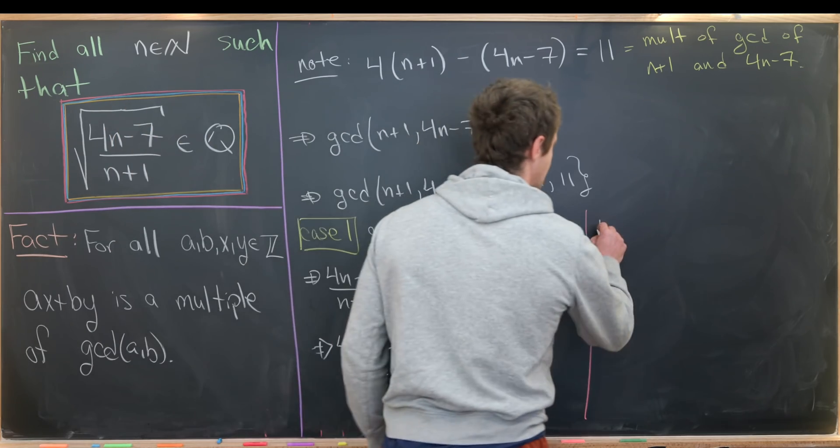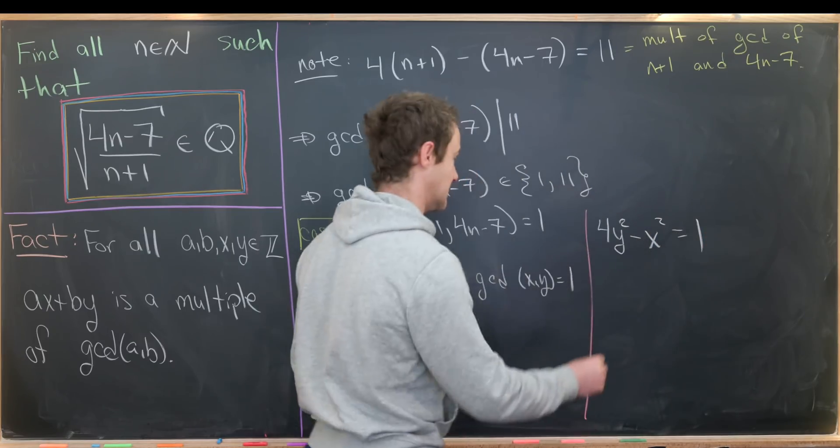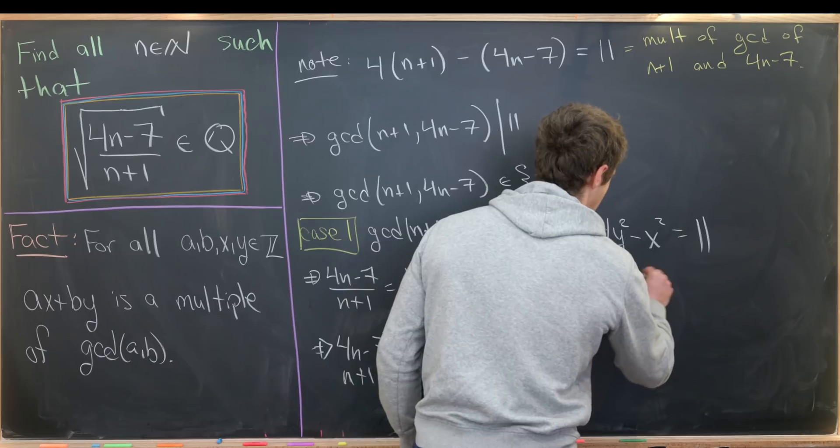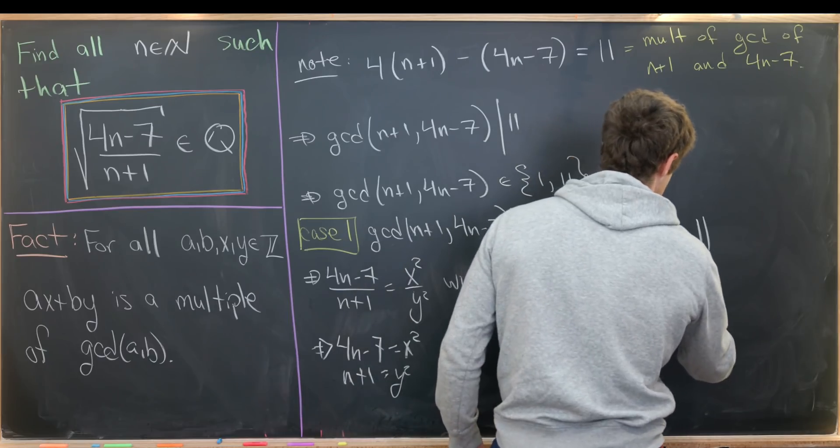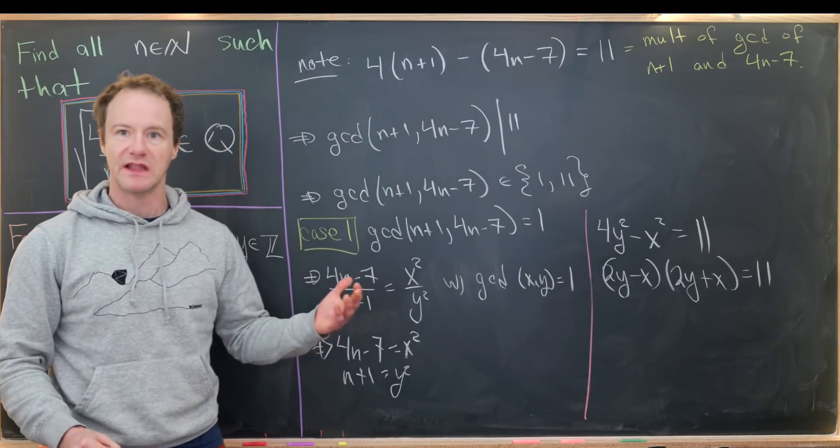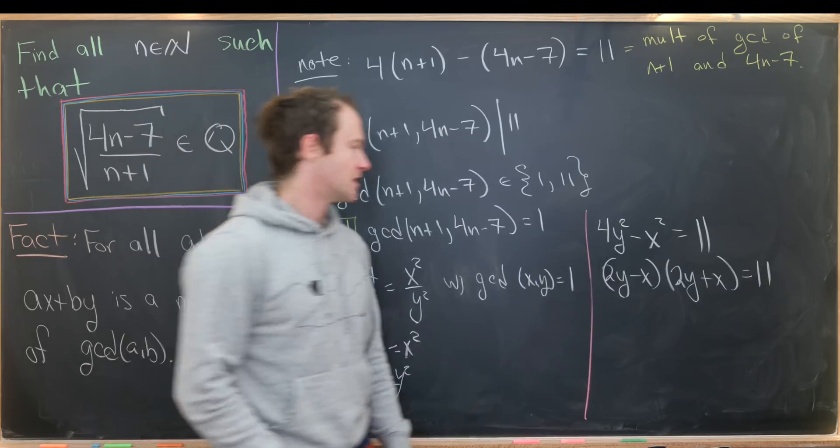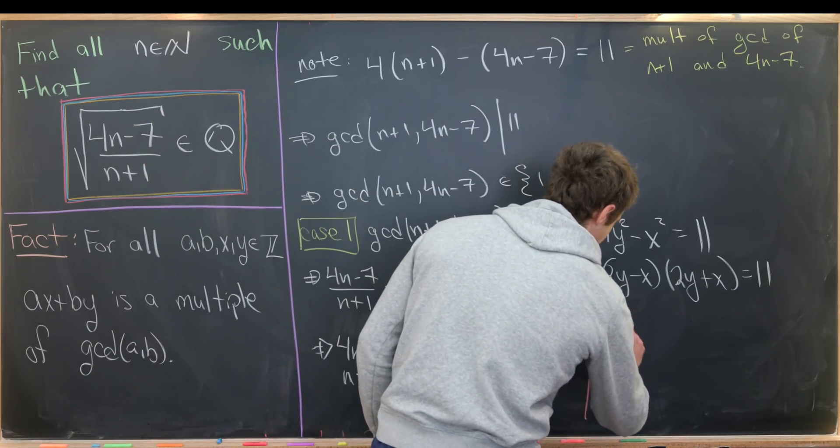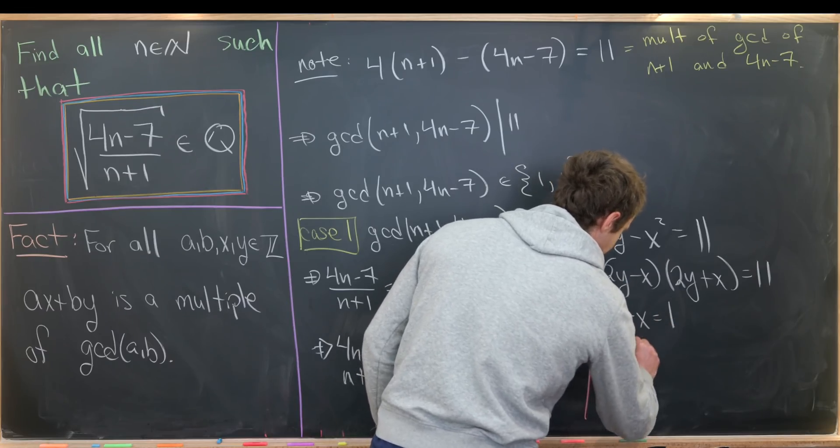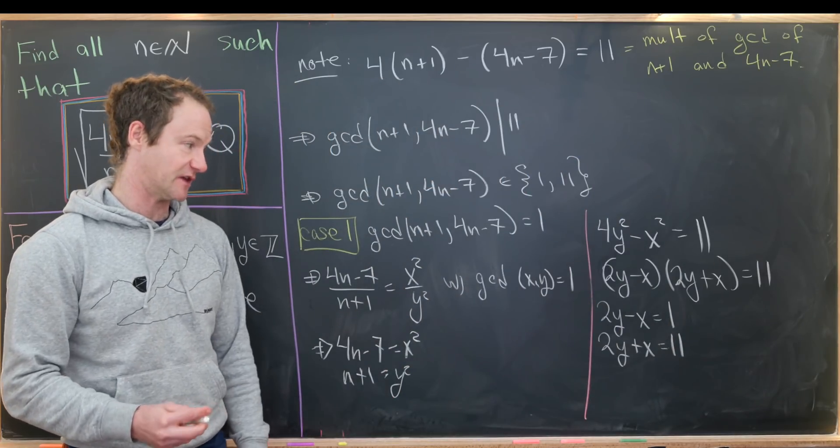So that'll give us 4y² - x² = 11. But we can factor that. Notice that factors as (2y-x)(2y+x) = 11. But now 11 only factors one way, and that's 1 times 11. So this really breaks into two more cases: we have 2y-x = 1 and 2y+x = 11, or vice versa. I'll just check this one and I'll let you check the other one.